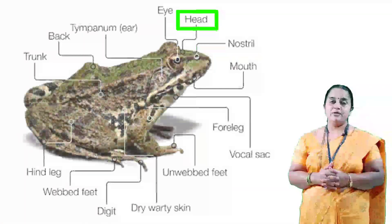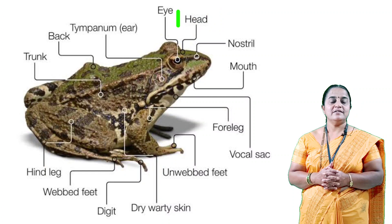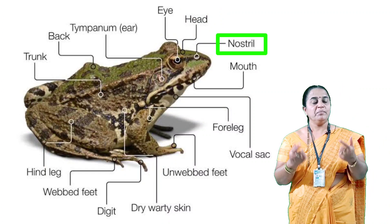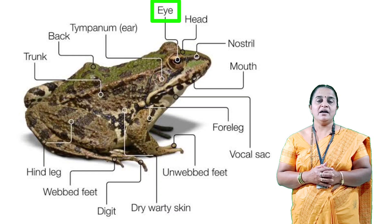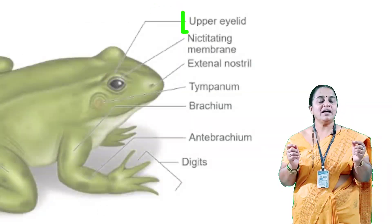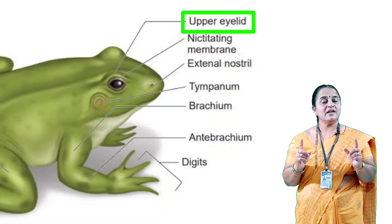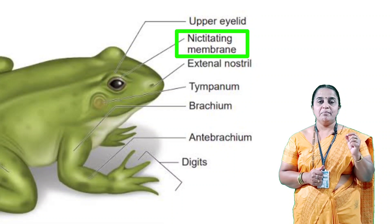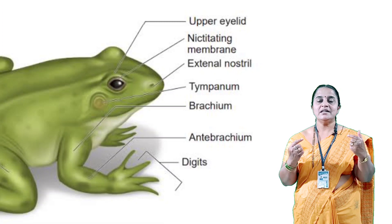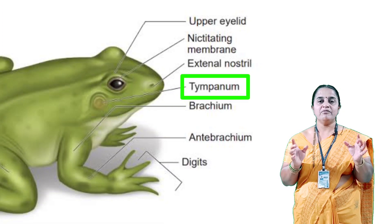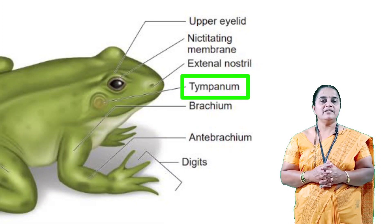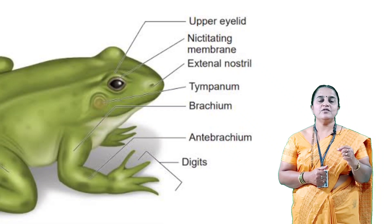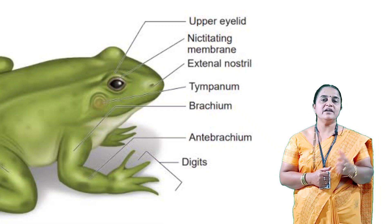Looking at the head of the frog, it has paired nostrils at the anterior part. Behind that are paired eyes with immovable eyelids, so the eyeballs are protected by a nictitating membrane. Paired internal ears called tympanum are found between the two eyes, behind the nostrils, and they receive the sense of vibrations or hearing.